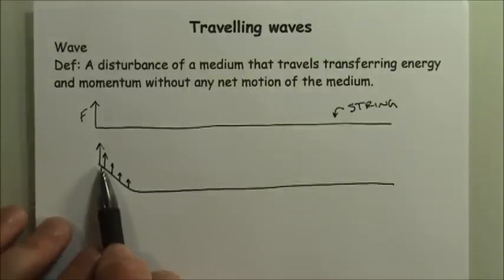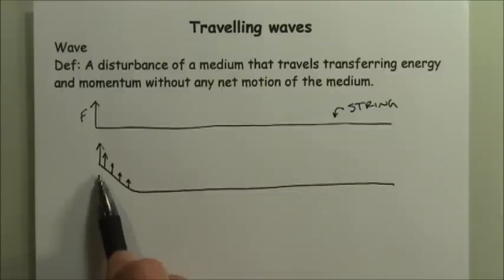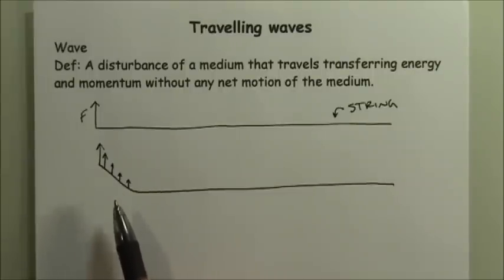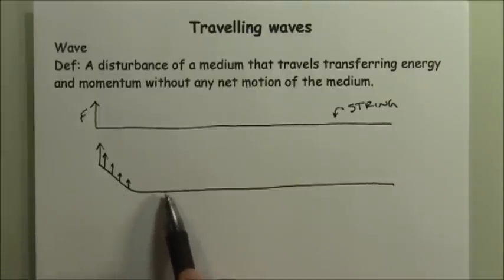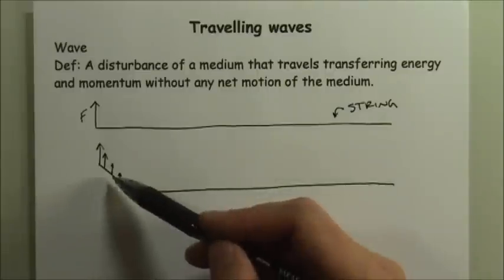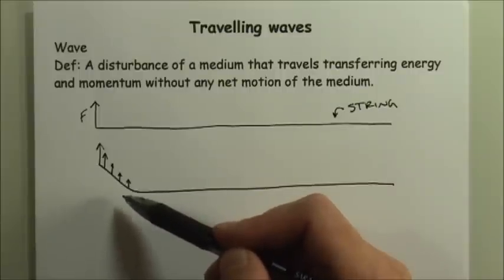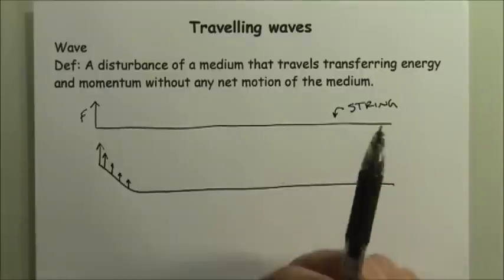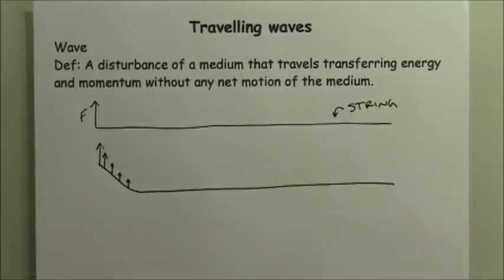So I exerted a force on one portion of the medium, that force was transferred to the next piece as soon as it started to move. Once it moved above the equilibrium position, its position caused it to exert a force on the next piece, and subsequently on each piece after that. This is how the disturbance travels through the medium — only once the medium moves out of equilibrium does it begin to exert a force on the piece next to it.